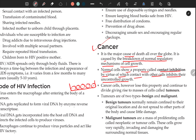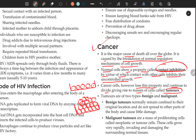Cancerous cells lose their contact inhibition. This leads to uncontrolled proliferation and multiplication of cells. Cancer cells lose the property of contact inhibition and continue to divide, giving rise to masses of cells called tumors.